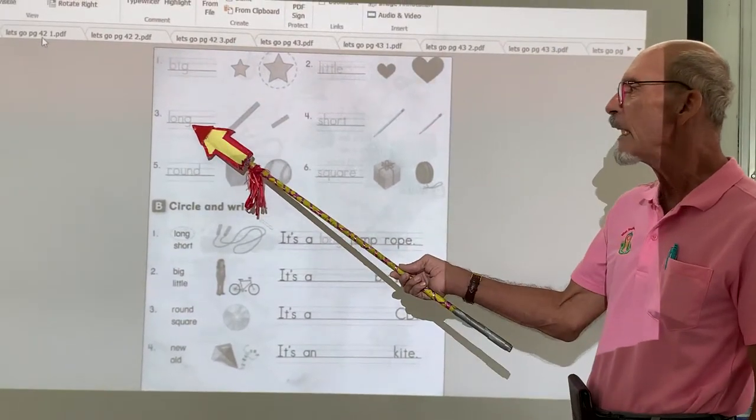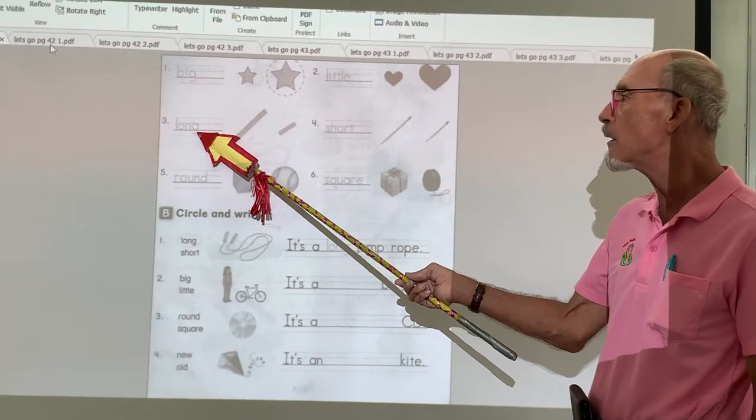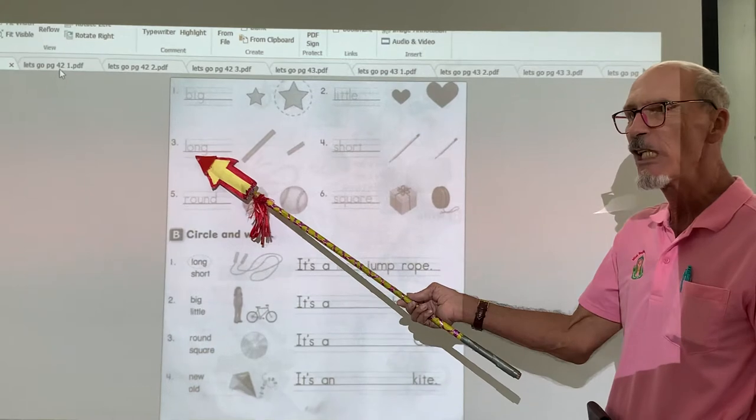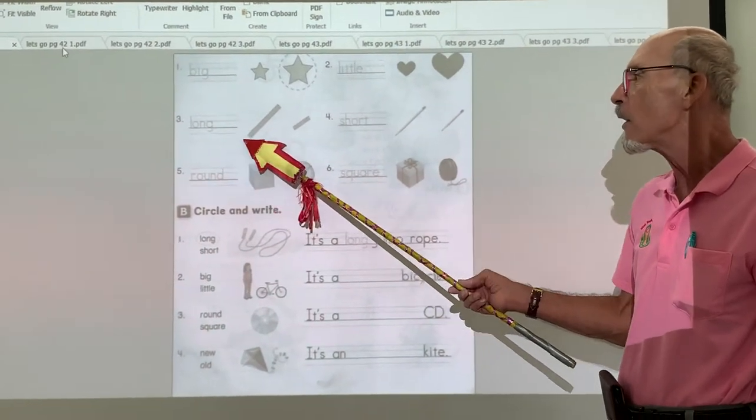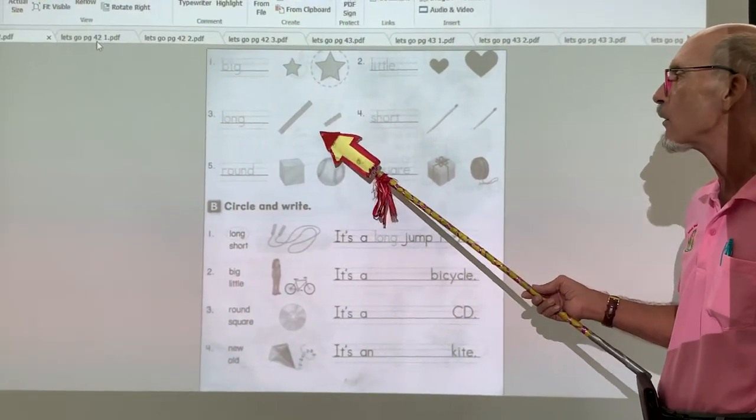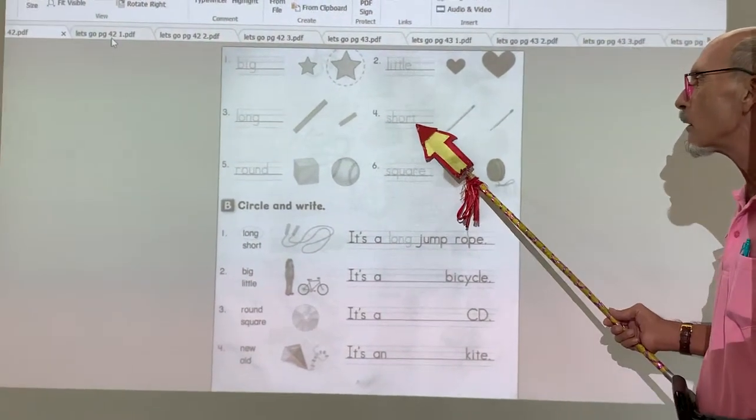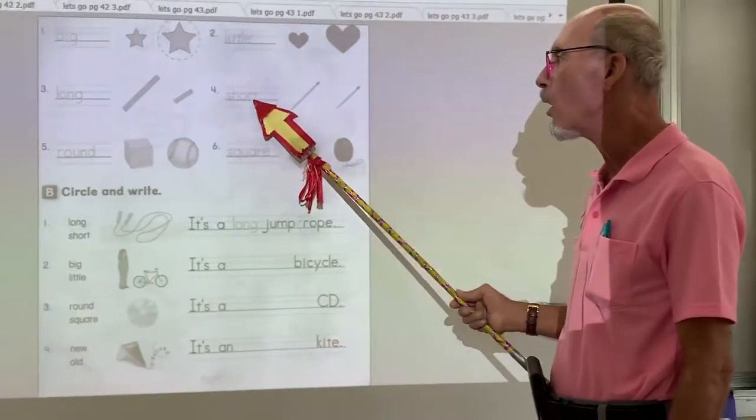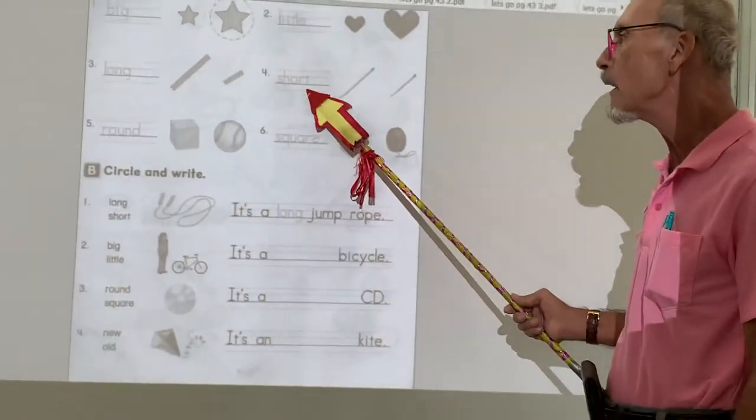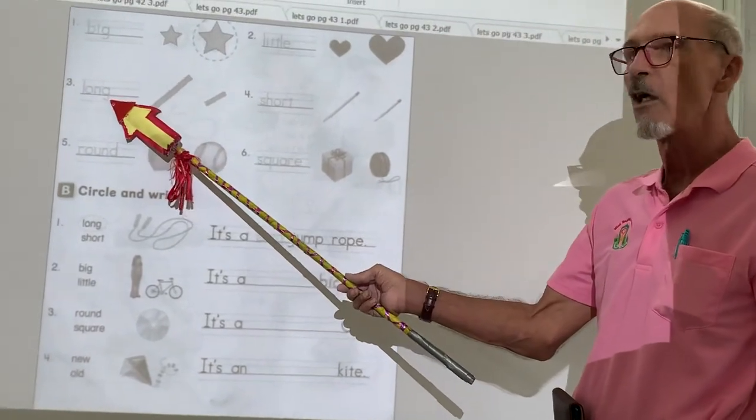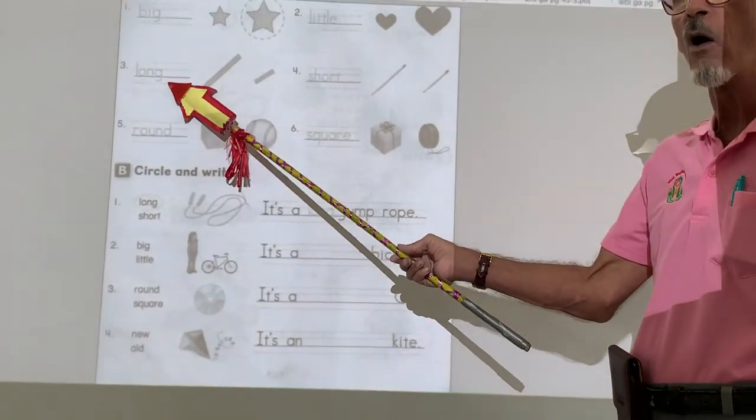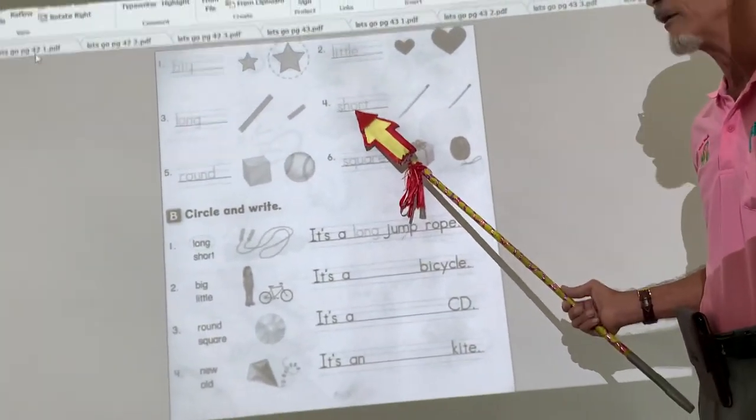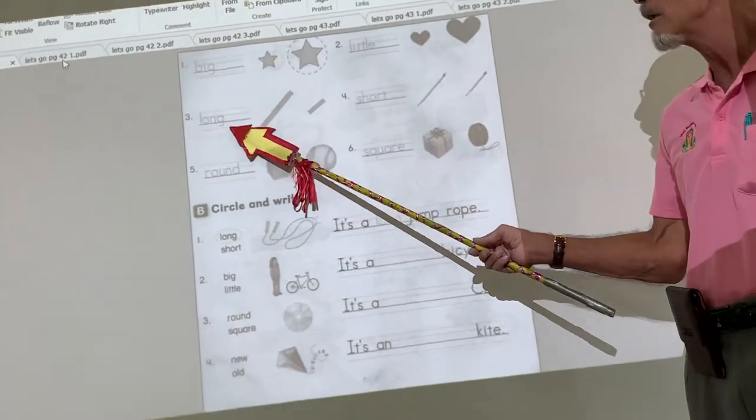Number three, long. L-O-N-G. Long. There's a long, and there's a short. Short. S-H-O-R-T. What you want to do is draw a circle around the long one. Draw a circle around the short one. Long. Short.